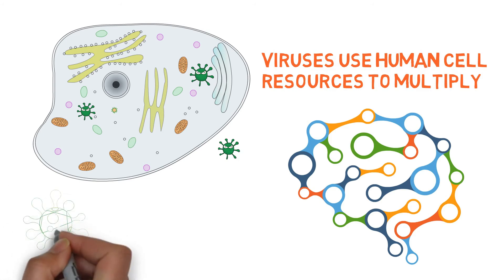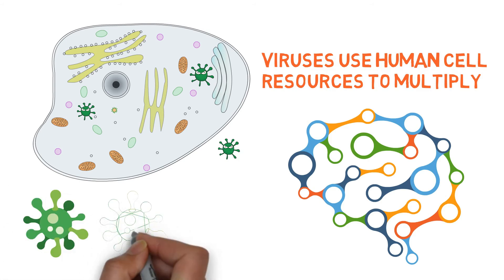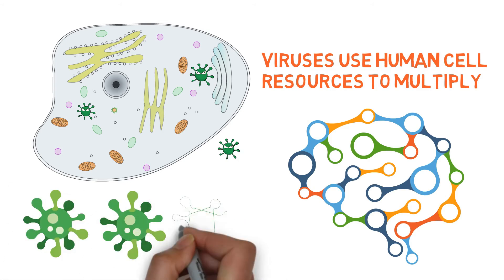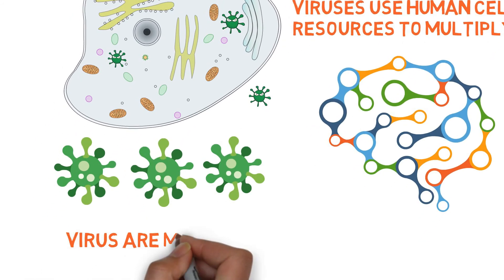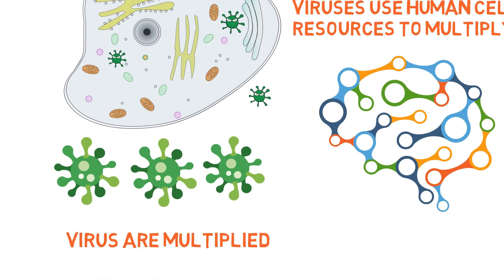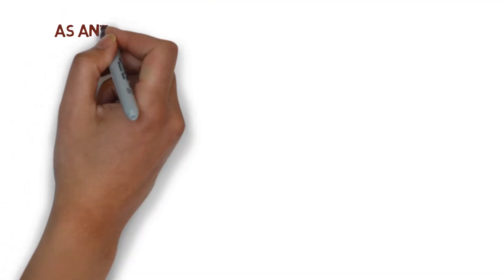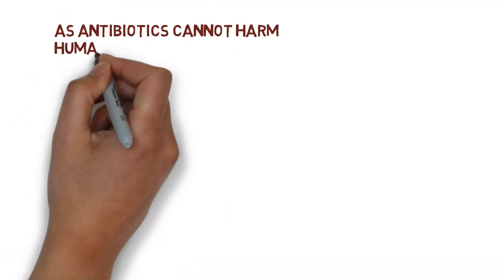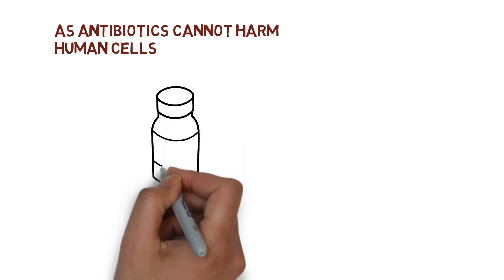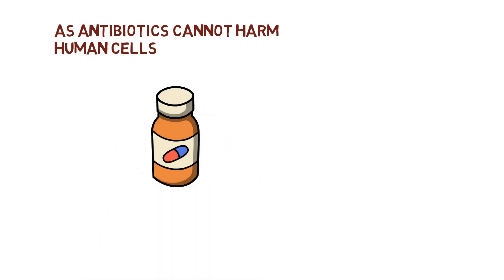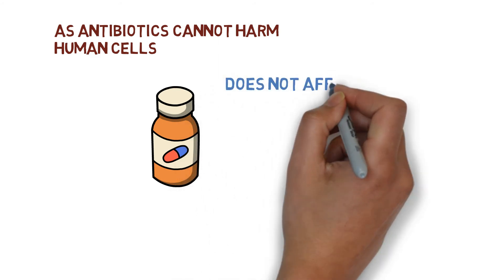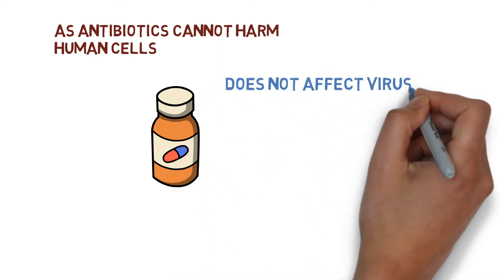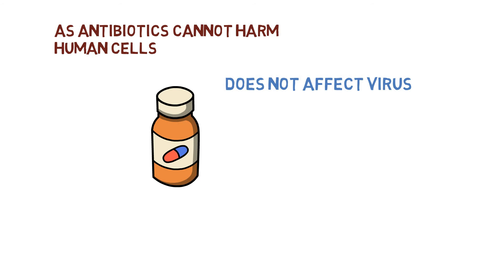Once inside, viruses use the resources of the host cell to multiply themselves. They use the protein manufacturing machinery of the cell to form the outer structure of the virus, producing multiple copies inside the host cell. Because antibiotics cannot harm human cells, they are also ineffective against viruses, since viruses infect the human cells by entering into them.